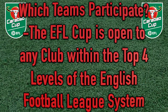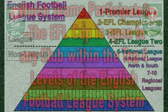Which teams participate? The Carabao Cup takes place in men's domestic English football, and more specifically, this competition is open to any club within the top four levels of the English Football League system. The English Football League system is a series of interconnected leagues for men's association football clubs in England, also known as the Football Pyramid. If you're used to more American sports, you can think of this like how Major League Baseball is at the top, then we have the minor leagues — AAA, AA, single A. So that means all 20 Premier League teams participate, all 24 teams from the EFL Championship, and all 24 teams from EFL League One.